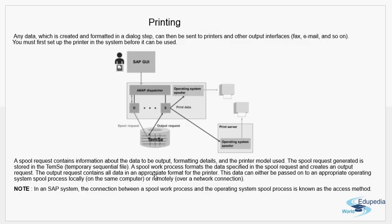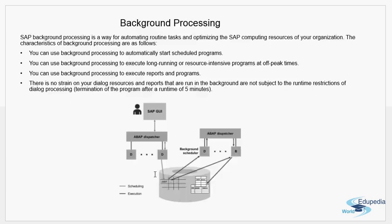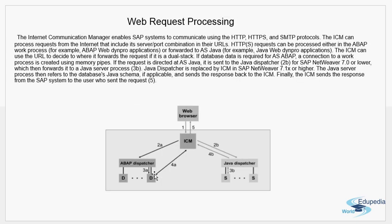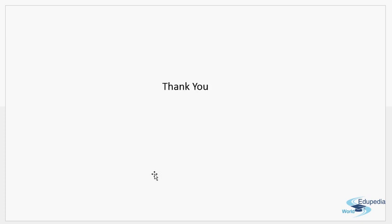To summarize, we have covered four important concepts: the spool work process for printing, background processing, the gateway server, and the ICM. Remember the difference between the gateway and the message server. With this we finish the entire topic of processing requests in an ABAP system, covering the individual components of a work process, the various types of services, and the work processes of an application server. Thank you.